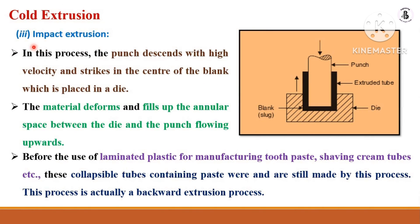The third cold extrusion type is the impact extrusion process. You can see the die material shaped as required, and the extruded tube is placed between the die and the punch. By lowering the punch, the extruded tube undergoes plastic flow according to the shape of the die and punch. The punch descends with high velocity and strikes the center of the blank placed into the die, developing an impact load. The material deforms and fills the annular space between the die and the punch, flowing upwards.